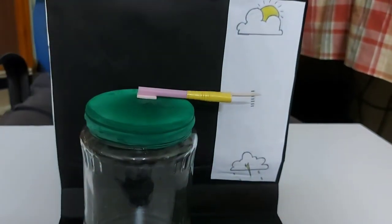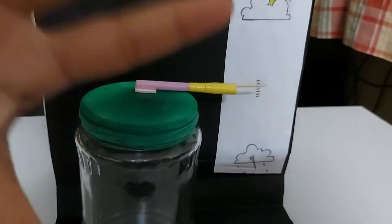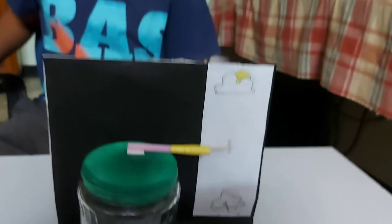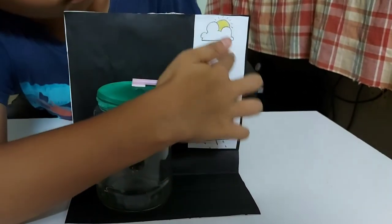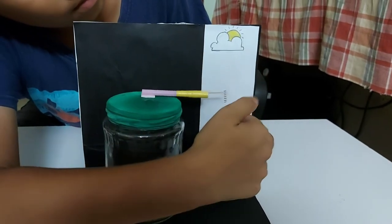This makes the straw pointer rise. When the air pressure drops, indicating bad weather, the lid swells and the pointer drops. Your barometer is most accurate when kept at a steady temperature.